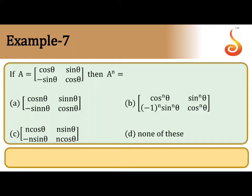Example 7: if A is equal to the matrix [cos θ, sin θ; -sin θ, cos θ], then A^n is equal to — you can see the options, everything is in terms of n.